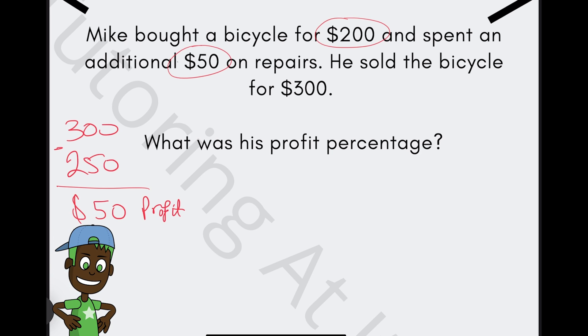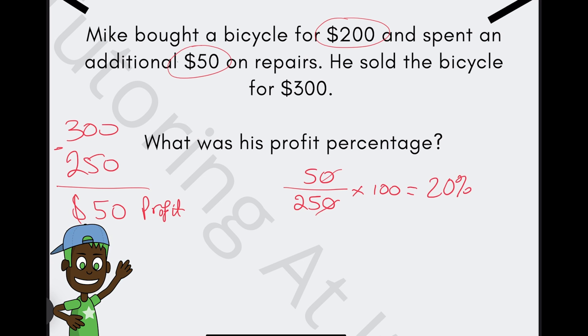But now let's calculate the percentage profit there. So all we need to do is take our amount, which is our profit, divide it by the total cost, which is $250, and then times that by 100. You can just do 5 over 25, which is seen as 20%, and that is your answer. Mike's profit percentage is 20%. Let's go to the next question.